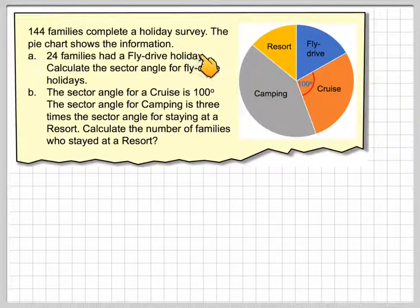144 families complete a holiday survey. The pie chart shows the information. 24 families had a fly-drive holiday. Calculate the sector angle for fly-drive holidays.